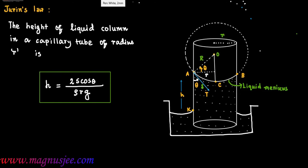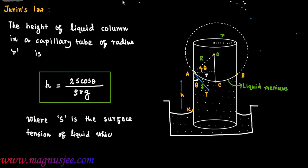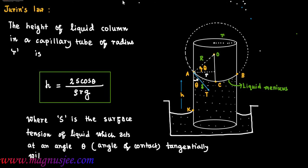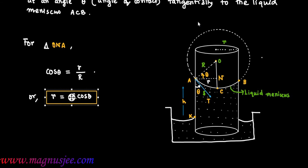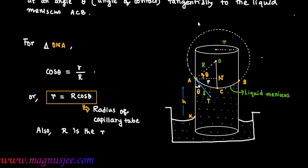The height of liquid column in a capillary tube of radius small r is given by h = 2S cosθ / ρrg, where S is the surface tension of the liquid acting at angle theta — which is also the angle of contact — with the wall of the capillary tube. For triangle ONA, cosθ = small r divided by capital R (hypotenuse), therefore small r = capital R cosθ. So we get the expression: small r = R cosθ, where theta is the angle of contact and capital R is the radius of curvature.